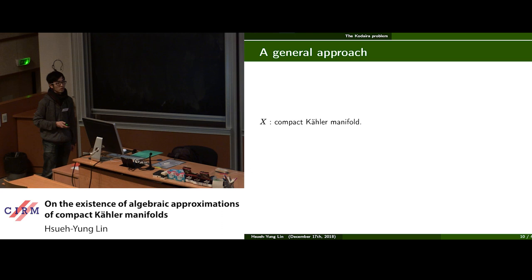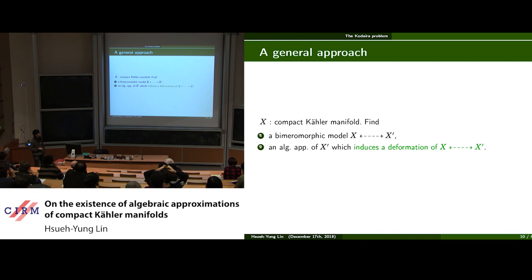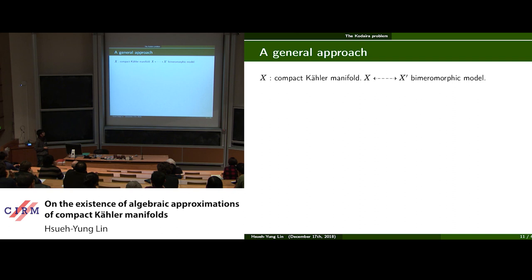Let me mention the general approach to finding algebraic approximations used in the proof of the main results. Given a compact Kähler manifold for which we want to find an algebraic approximation, the idea is simple: it suffices to find a bimeromorphic model of it, along with an algebraic approximation of this bimeromorphic model which induces a deformation of the bimeromorphic map. Given such a situation, the first question is: when does a deformation of the bimeromorphic model X-prime induce a deformation of X?